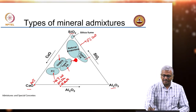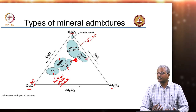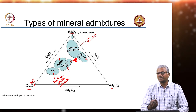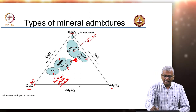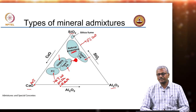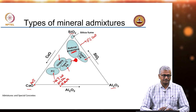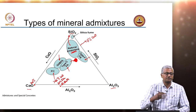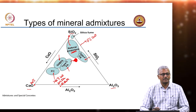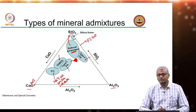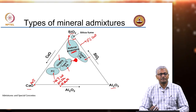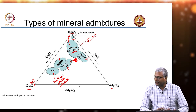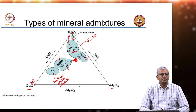Type F fly ash is almost a pure alumino-silicate — there is no calcium in it; there is alumina and silica and not much calcium. Natural pozzolans are also mostly alumino-silicates; they may or may not have any calcium, but more likely they are purer forms of silica than alumino-silicate. Silica fume is almost a completely pure form of silica — you do not really have any alumina or any calcium; it is almost 100% silica.